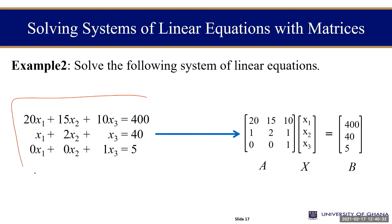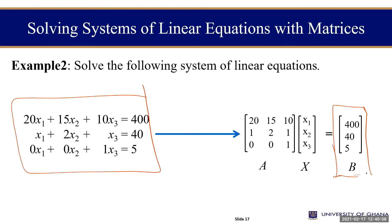Therefore, by transformation, we have matrix A as: row 1 is 20, 15, 10; row 2 is 1, 2, 1; row 3 is 0, 0, 1. We name this matrix A. Then for all the decision variables, we name it matrix X. And for the resources, we name it matrix B. Now we are to solve for x₁, x₂, and x₃, and we want to apply the Gauss-Jordan method through the form of a matrix.